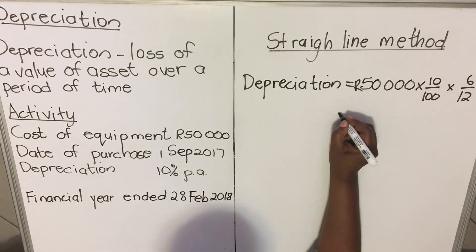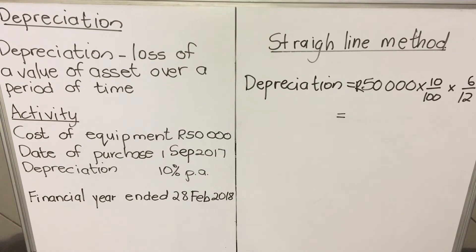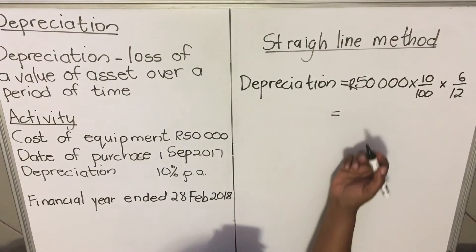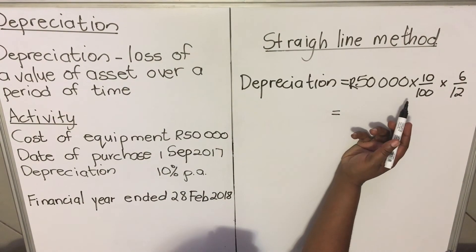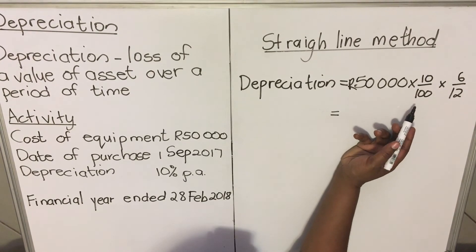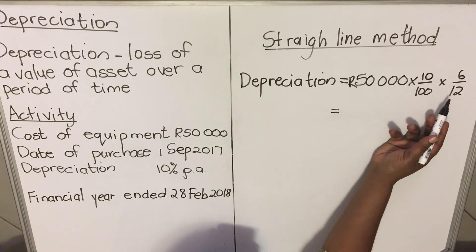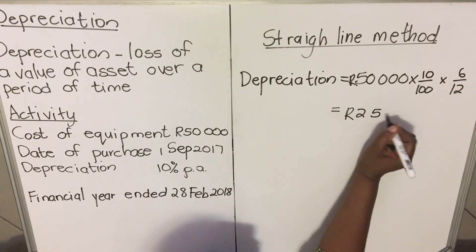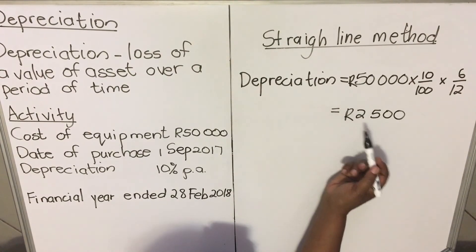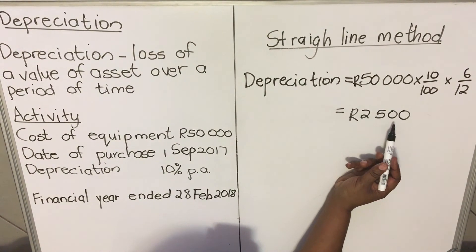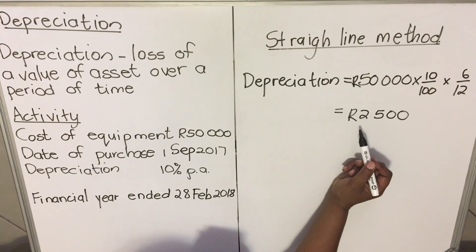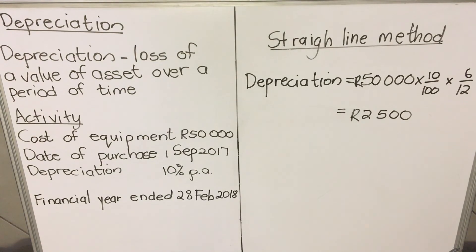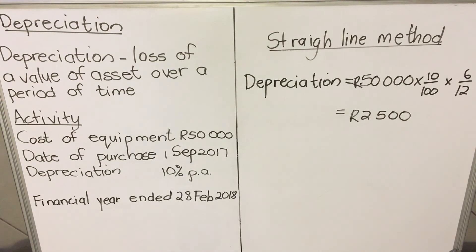We only had the equipment for six out of twelve months. Calculating: fifty thousand times ten divided by one hundred times six over twelve gives us two thousand five hundred. So the equipment will depreciate by two thousand five hundred using the straight-line method. This is the end of our lesson — please watch the next video on depreciation using the other method.